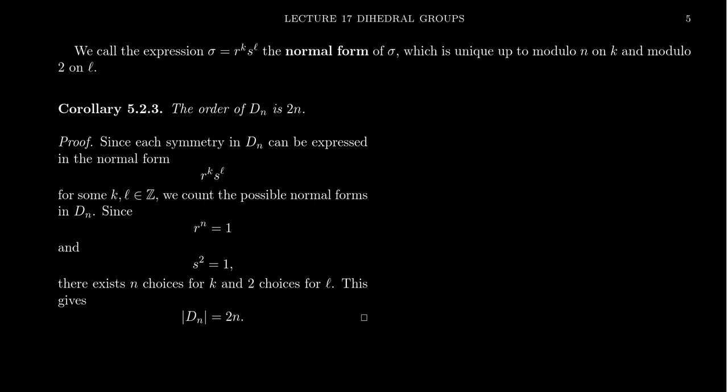In the previous video, we showed that every symmetry in the dihedral group dN has a so-called normal form. Symmetry sigma can be factored uniquely as r to the k times s to the l, where r is the principal rotational symmetry. You rotate counterclockwise by the angle 2 pi over n, and s is the horizontal reflective symmetry across the real axis. So we think of our n-gon as the complex n-th roots of unity. So we have these normal forms.